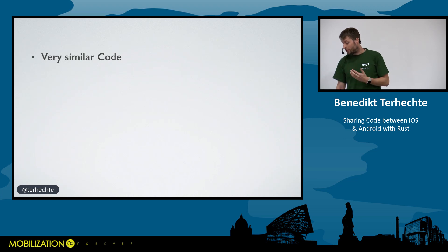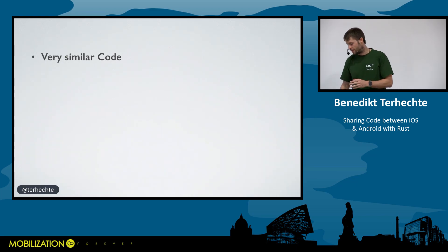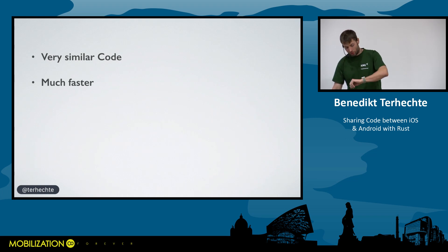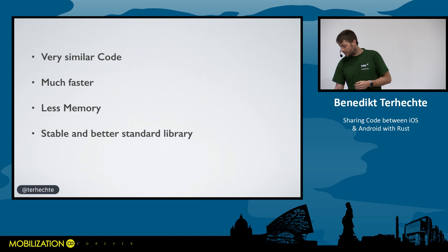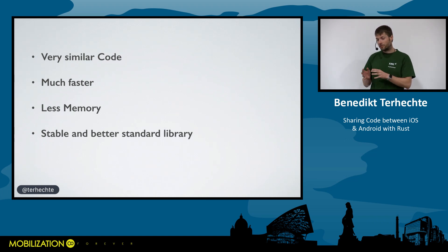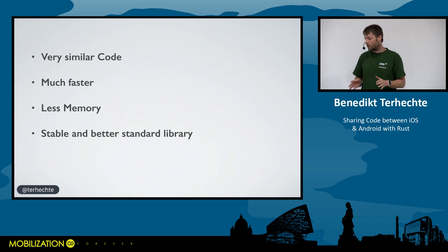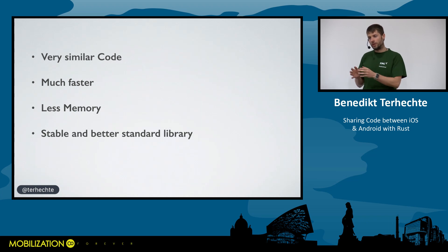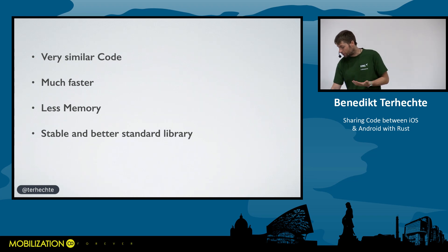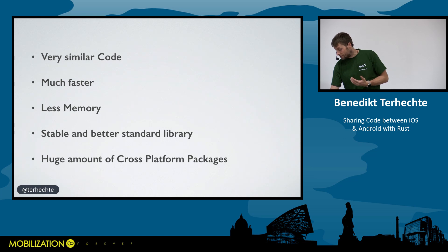Going back from the benchmarks: we saw very similar code between Kotlin, Swift, and Rust. The code was much faster in Rust, consumed less memory, and Rust has a more stable and complete standard library. Swift was missing the chunk method, Kotlin Native had problems with JSON, but Rust doesn't have those issues because it's a multi-platform language by design. Packages written for Rust work automatically cross-platform.